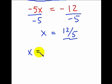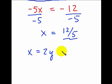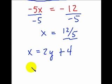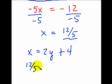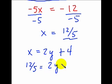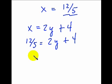Now we'll take one of the equations — x equals 2y plus 4 — take the x and stick it into it, and solve for y. Thus we have yet another simple linear equation in one variable, which gives us the power to solve for that value.